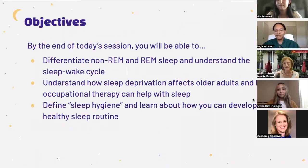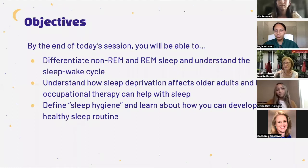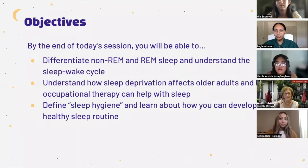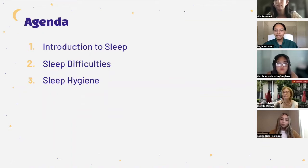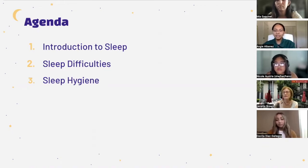Our objectives for today are to differentiate between REM and non-REM sleep and understand the sleep-wake cycle, understand how sleep deprivation affects older adults and how occupational therapy plays a role in helping with sleep, and to define sleep hygiene and learn about how you can develop a healthy sleep routine. Our agenda includes a brief overview on sleep, a discussion on sleep deprivation and occupational therapy's role, and then tips and strategies to attain a good night's rest.